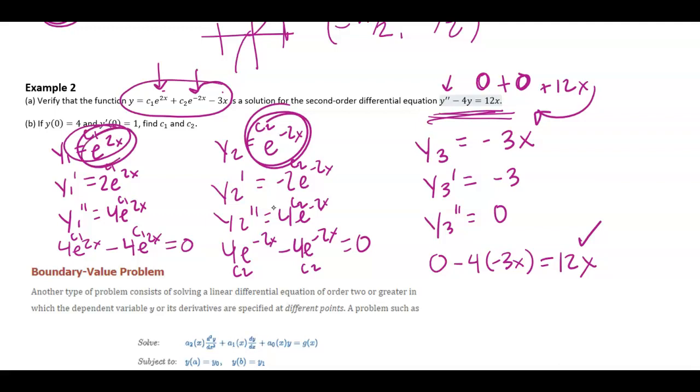Okay, so this first one, when I plug it in, I get 0, great. This one, when I plug it in, I get 0, great. And then here, when I plug in y3, I get that 12x piece over here. So that is where that 12x piece comes from on the right-hand side when I plug in the derivative.